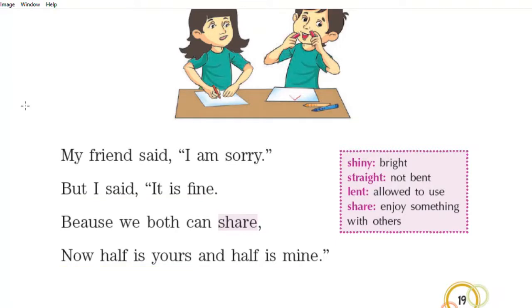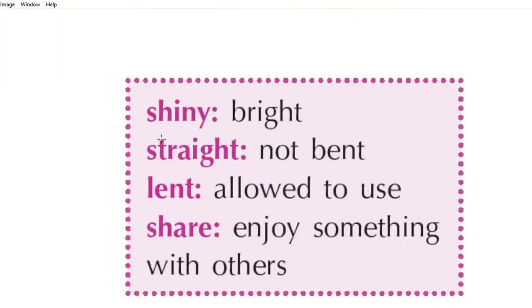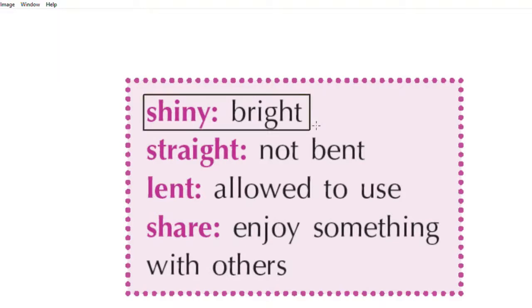Very good children. Now it's time to see the difficult words of this poem and we are going to see the word meanings of these new difficult words. The first word is 'shiny' and the word meaning of shiny is 'bright.' For example, the flowers are bright and beautiful when they shine. The sun shines brightly, so the word meaning of shiny is bright. The next word is 'straight' and the word meaning of straight is 'not bent.'